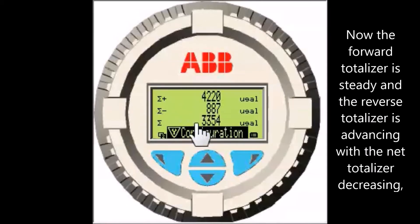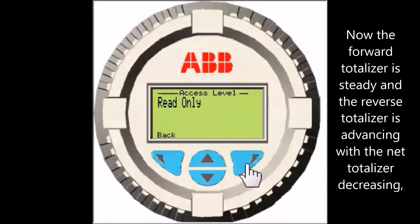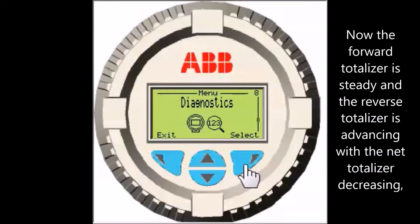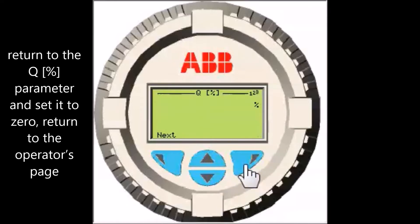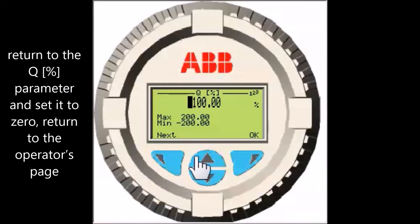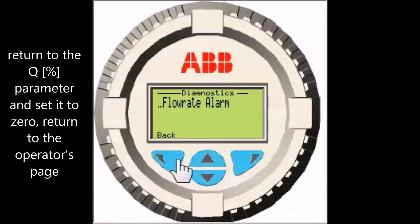Now the forward totalizer is steady and the reverse totalizer is advancing, with the net totalizer decreasing. Return to the Q percent parameter and set it to 0, then return to the operator page.